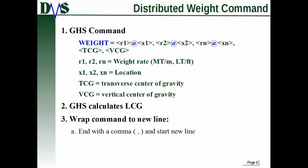And you keep doing that, weight rate at location, weight rate at location. And you keep going for however many entries you want to make. And then you finish it off with the TCG and the VCG of that weight. So those two are still entered on their own. But the longitudinal information now is entered as rate at location. And GHS will automatically calculate the LCG. Now you notice I said you can keep going as long as you want. And if you're doing something like your lightship weight distribution, this could be quite a few weight pairs. So you might actually have to go to multiple lines.